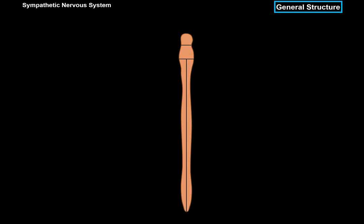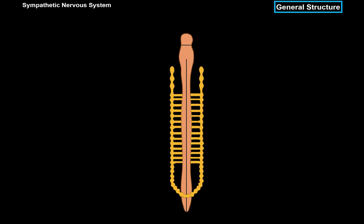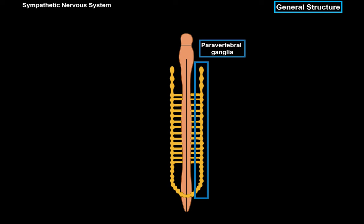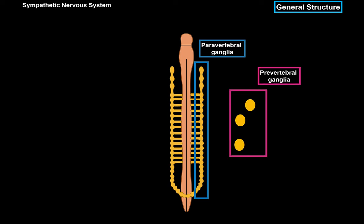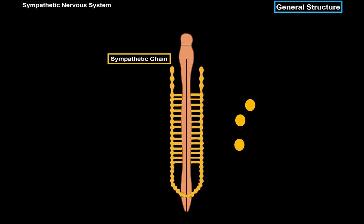The second thing: here we see the pons, below it is the medulla, then the spinal cord. When we talk about sympathetic ganglia, we divide those into two groups based on their location. They can be paravertebral ganglia, located laterally to the spinal cord, or midline prevertebral ganglia, located in front of the vertebrae and the aorta. The paravertebral ganglia run alongside the spinal cord and are interconnected, forming a sympathetic chain of ganglia.